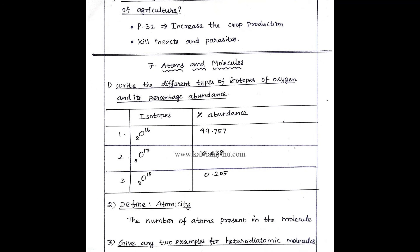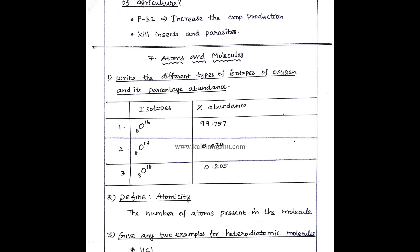Next. Physics, Chemistry. In the first chapter, atoms and particles. Write the different types of isotopes of oxygen and its percentage abundance.